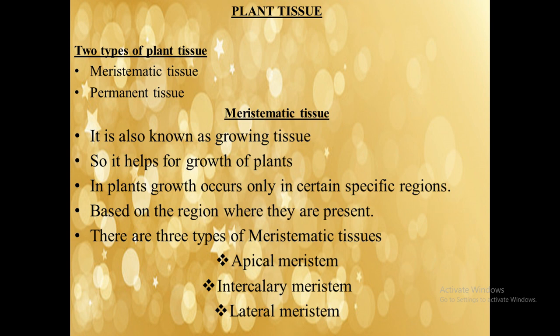Plant tissue. There are two types of plant tissue: meristematic tissue and permanent tissue. The first is meristematic tissue, also known as growing tissue. It is the most active and ever-growing tissue in plants, and helps in the growth of plants.